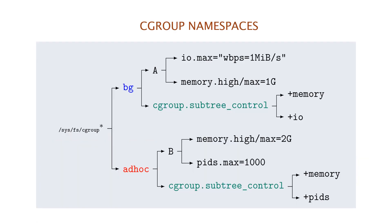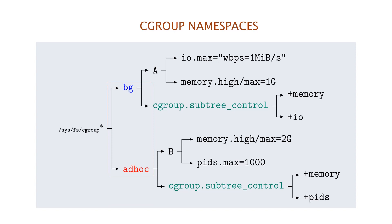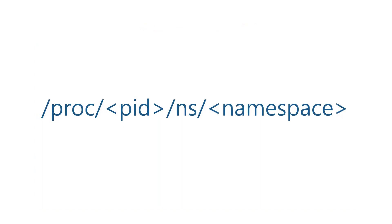Each Cgroup namespace has its own set of Cgroup root directories. These root directories are the base points for the relative locations present in the corresponding records in the /proc/PID/cgroup file. When a process creates a new Cgroup namespace, its current Cgroup directories become the Cgroup root directories of the new namespace. This applies both for Cgroups version 1 hierarchies and the Cgroups version 2 unified hierarchy. The information about a particular namespace of a process can be obtained from the sub-directory named after the namespace present under /proc/PID/ns directory.